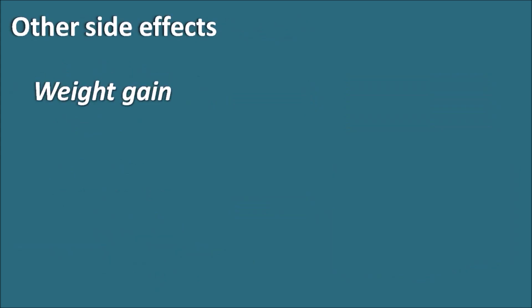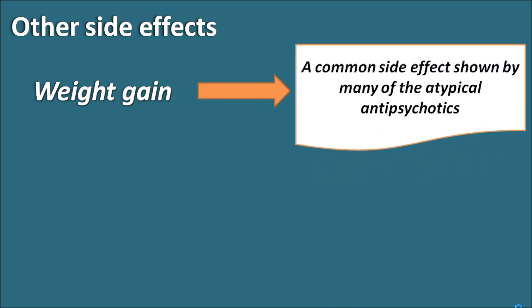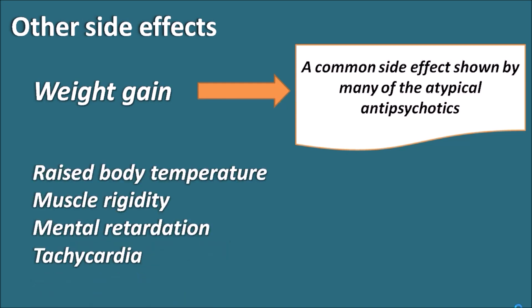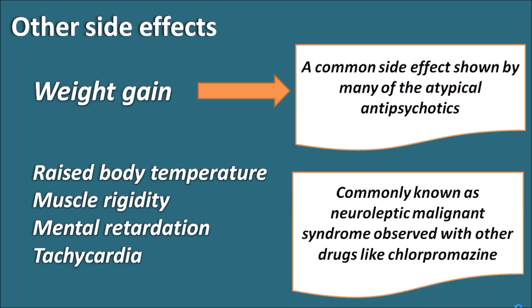Other side effects include weight gain, which is a common side effect shown by many atypical antipsychotics. Aripiprazole can also cause raised body temperature, muscle rigidity, altered mental status, and tachycardia — a cluster commonly known as neuroleptic malignant syndrome, also observed with other drugs like chlorpromazine. Neuroleptic malignant syndrome can be treated with dantrolene, which blocks calcium release from the sarcoplasmic reticulum, thereby preventing muscle rigidity and the rise in body temperature.